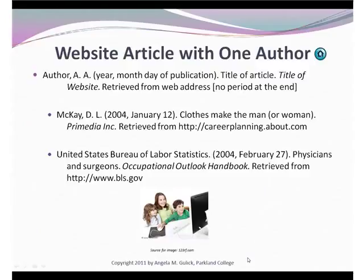We're going to begin with a website article with one specifically named author. The way this works is I give you a general template, and then I give you examples. So we begin with our author information — last name, first initial, middle initial. We put the date in parentheses. We provide the title of the article, followed by the title of the website italicized, and then retrieved from the web address. Note there's no period at the end of any of these website article citations.